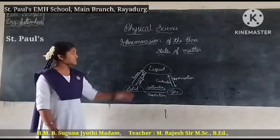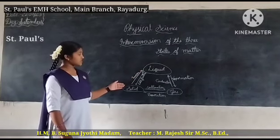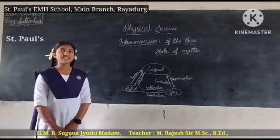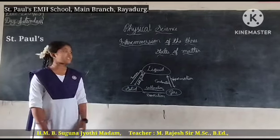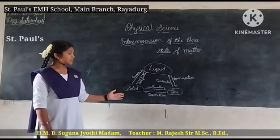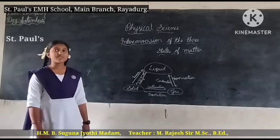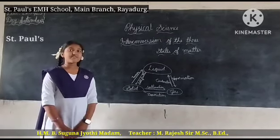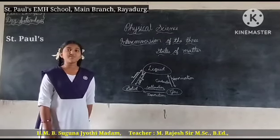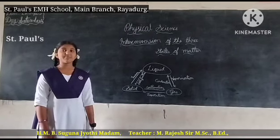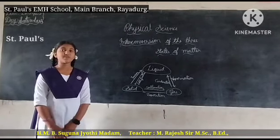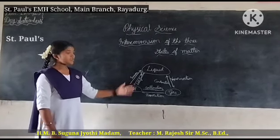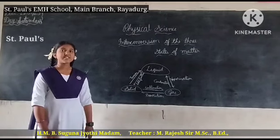Liquid changes into solid by the process of solidification. When the particles decrease in motion, the liquid can be converted into solid. For example, when water is poured into an ice tray and kept in the fridge, the water freezes and becomes solid — that is solidification.